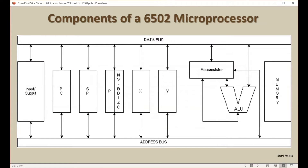Here's a summary overview of the 6502 processor from chapter three of the book Atari Roots. On the left are shown all the various registers. We have the program counter, which helps the CPU keep track of the next instruction that needs to be executed; a stack pointer which keeps track of memory addresses used by the CPU; and a process status register which keeps track of the various states of the processor.